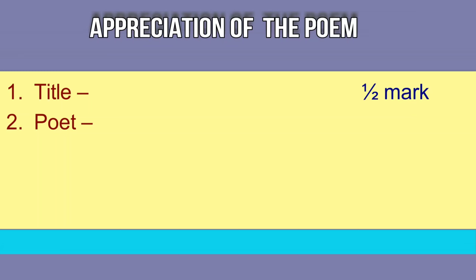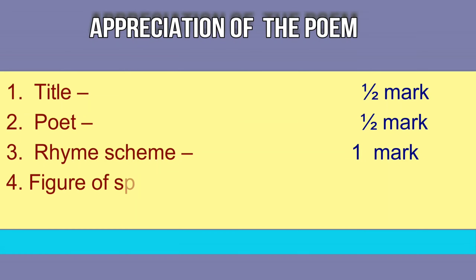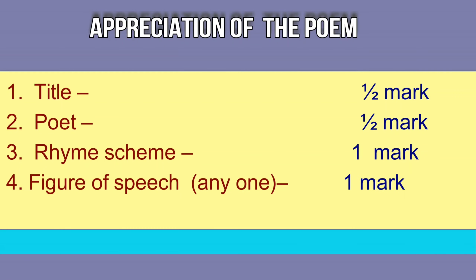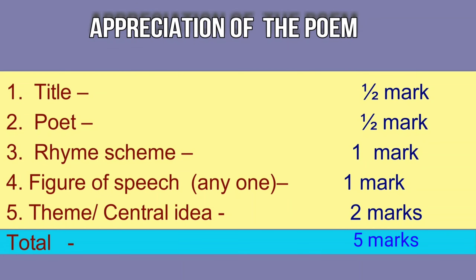This question comes for 5 marks. The title carries half mark, name of the poet carries half mark, rhyme scheme is there for 1 mark, figure of speech is there for 1 mark — you have to write only 1 figure of speech. Then the theme or the central idea is there for 2 marks. And that is how you get 5 marks for this question.